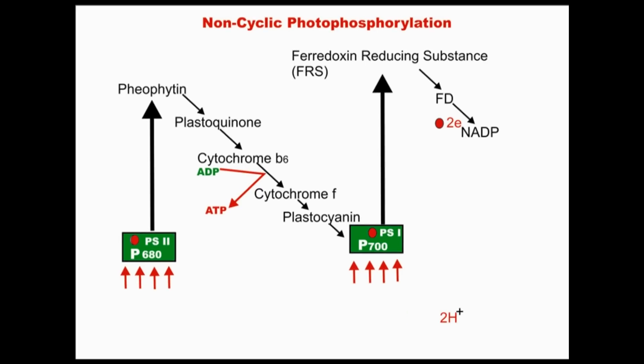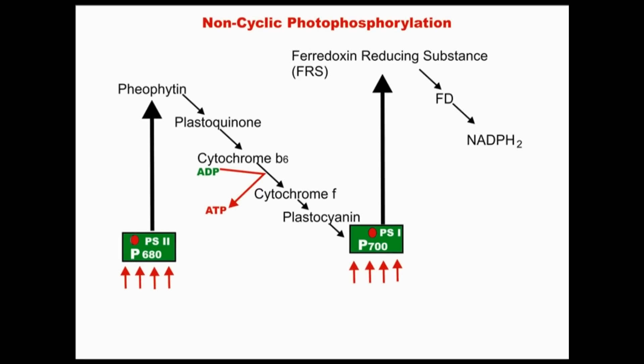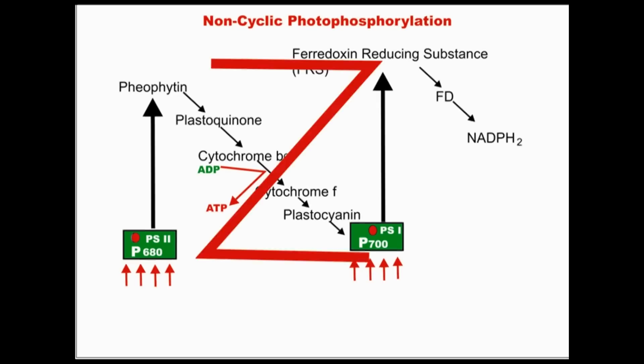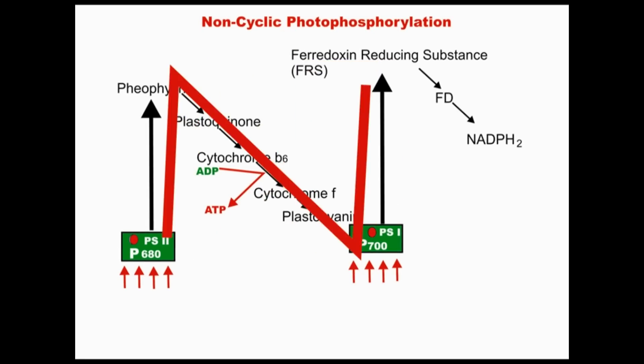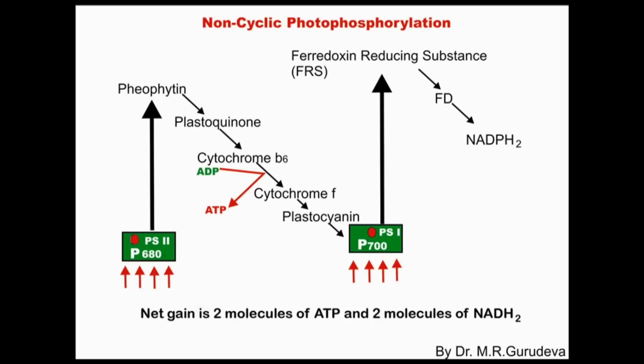The hydrogen is used in the formation of NADPH₂. The path of electrons from water to NADPH₂ involves two photosystems. This path of electrons appears like the letter Z, and hence the path is called the Z-scheme. The net gain in non-cyclic photophosphorylation is two molecules of ATP and two molecules of NADPH₂.